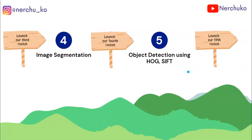The fourth step is image segmentation. What is image segmentation? We will separate objects in the image. Contours are nothing but just like boundaries on the image. We will explain and show image segmentation.